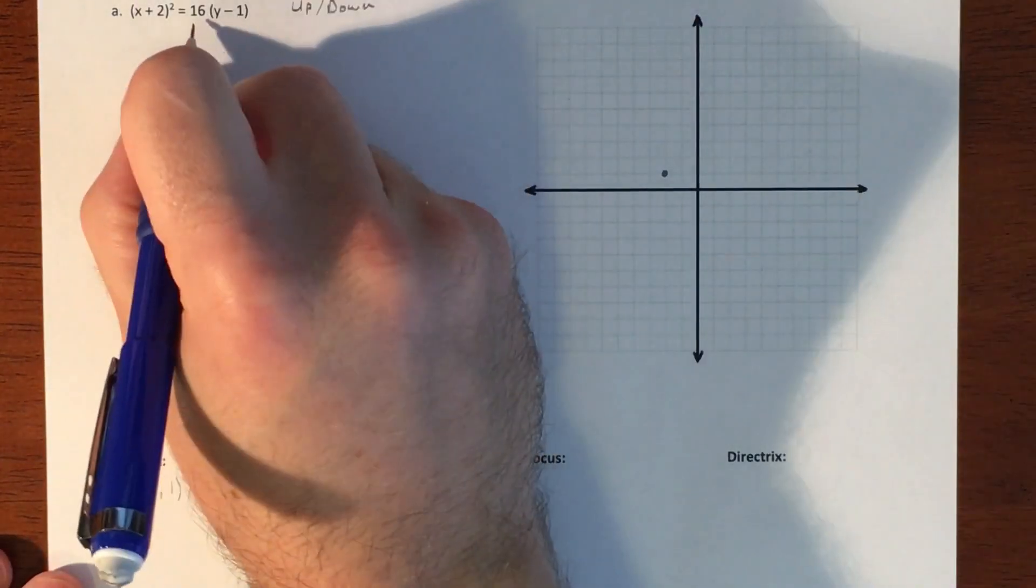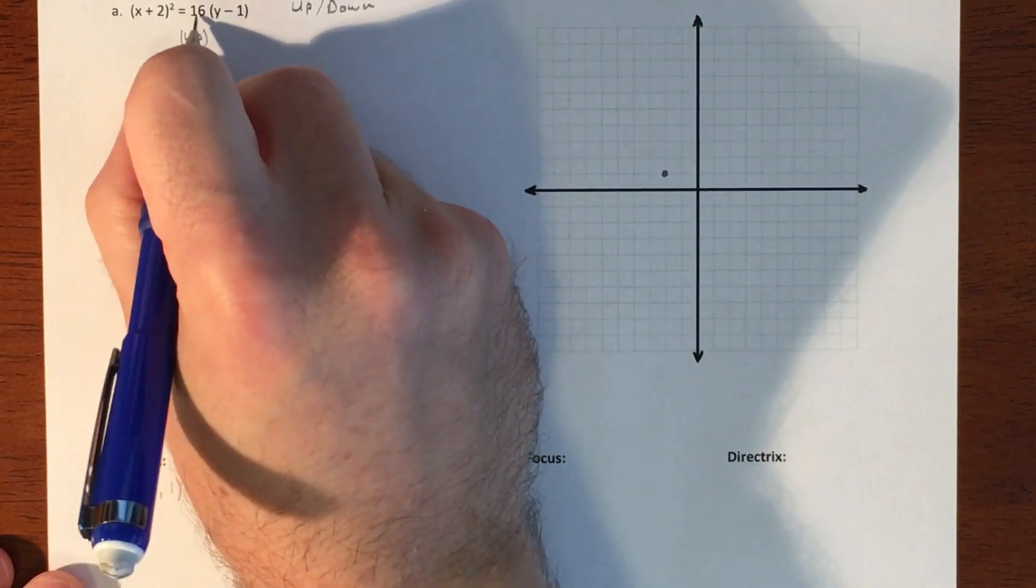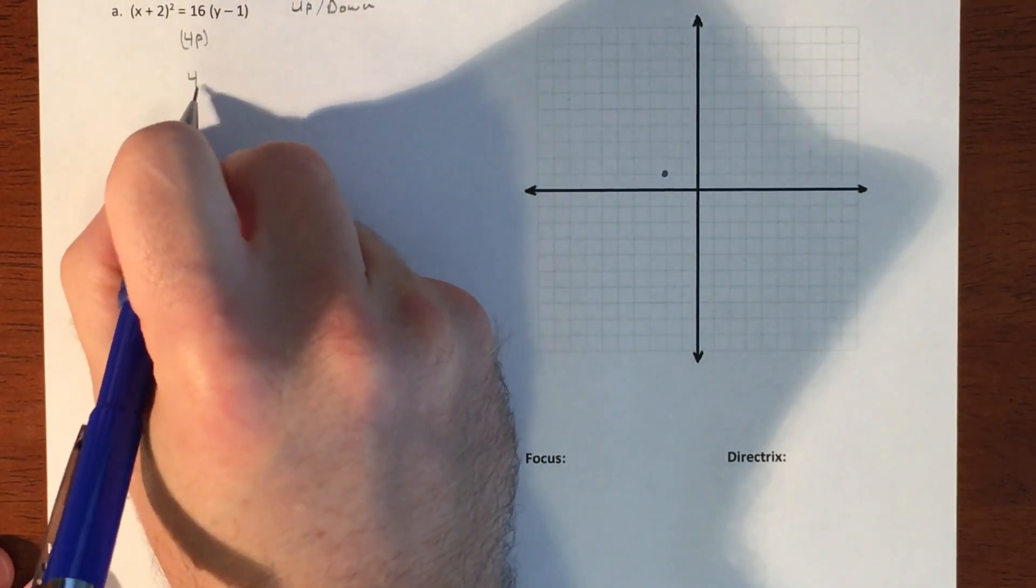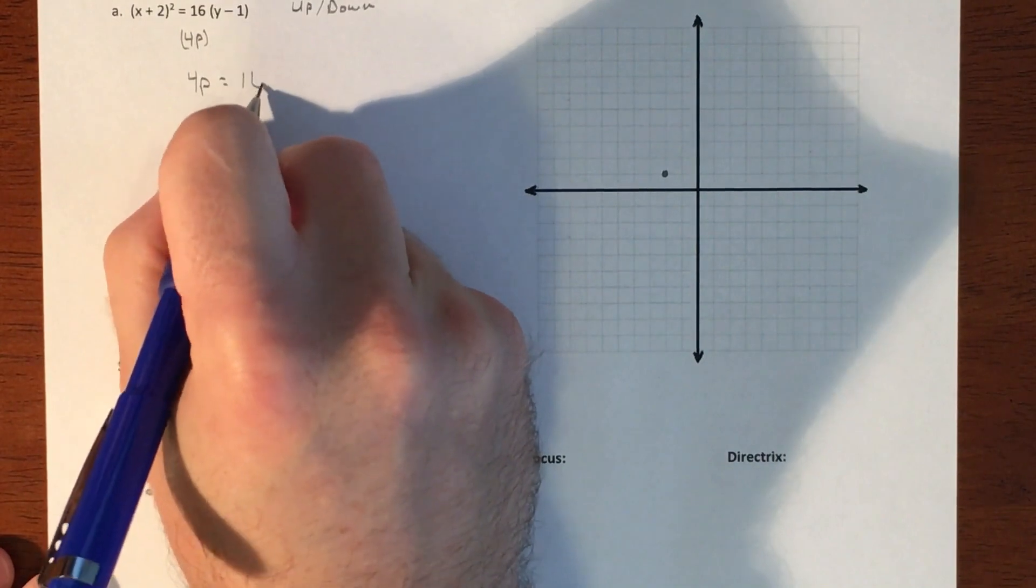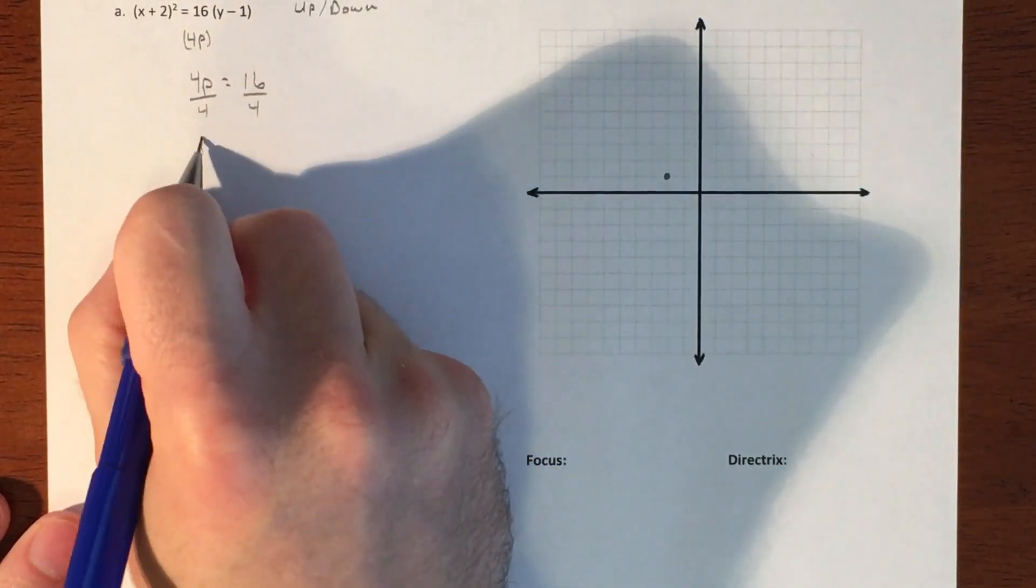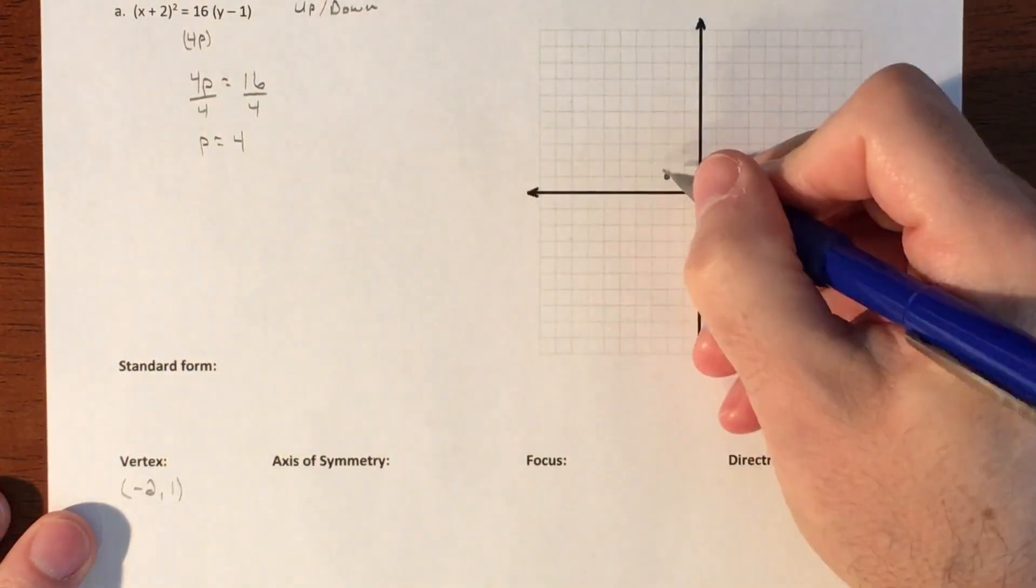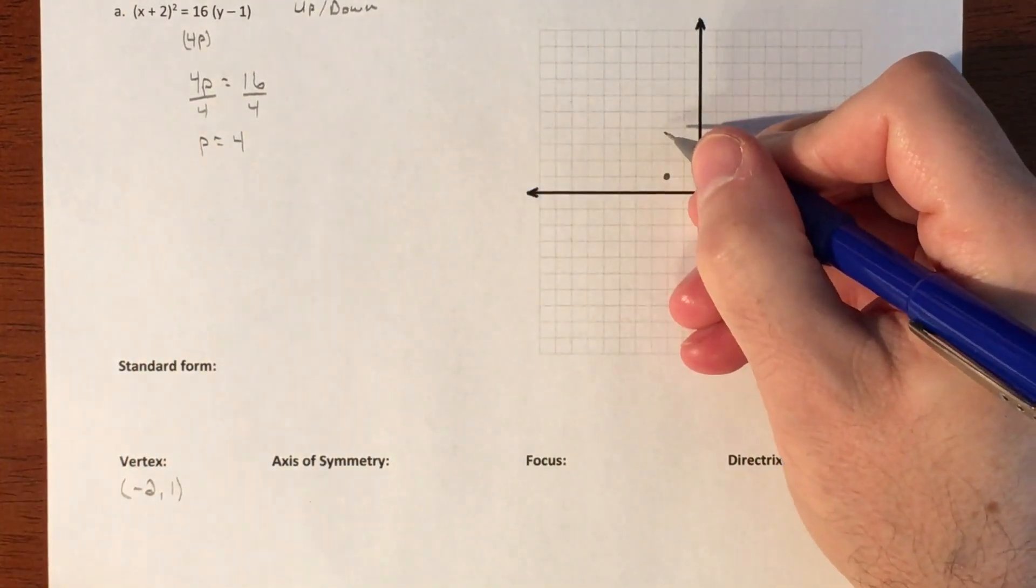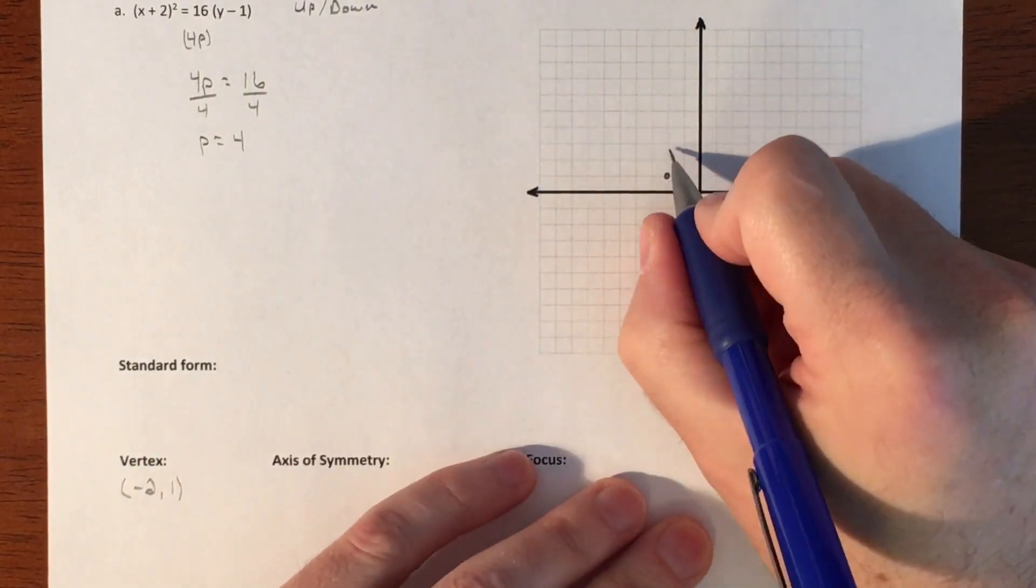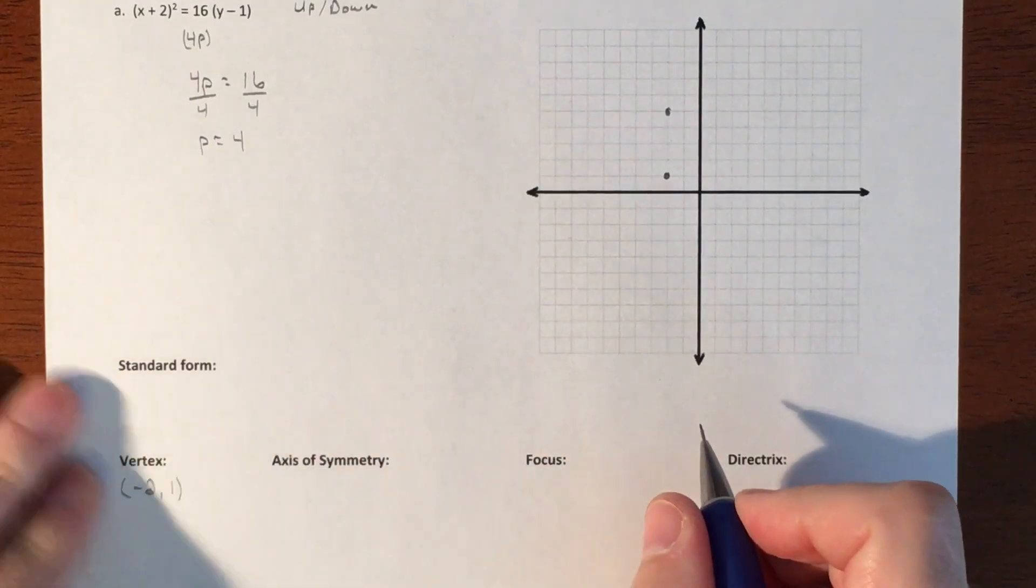Left two, up one. Now we need the p value. Remember that this is your 4p piece here, which is 16. So we just take 4p, set it equal to 16, solve for p. We divide by 4 and p equals 4.